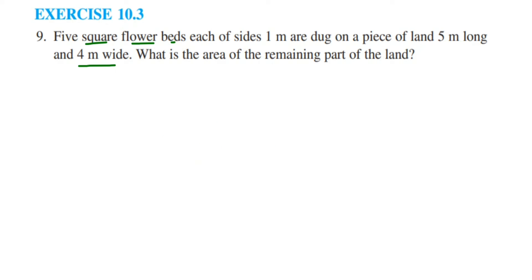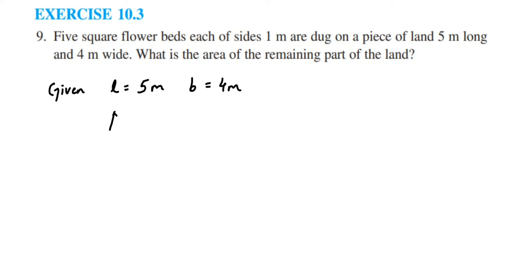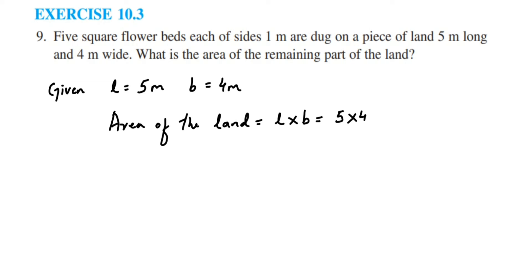So here is the solution. First we write down what is given: length is equal to 5 meters and breadth is equal to 4 meters. Area of the land — since it's a rectangle shape — will be length into breadth, so 5 into 4, which gives us 20 meter square. That is the area of the whole land.